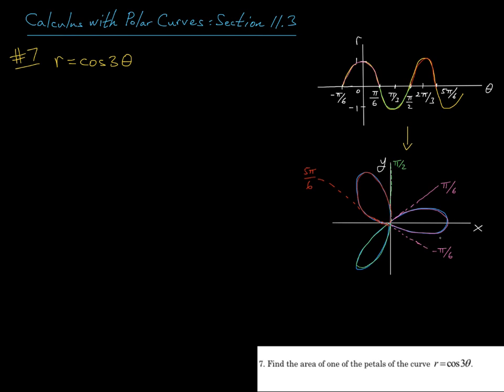So that says if we rotate from minus pi over 6 to pi over 6, we're going to wind out here, reach our maximum radial distance when theta is 0, and then come back into the origin in a symmetric fashion. So we're going to trace out this petal right here.